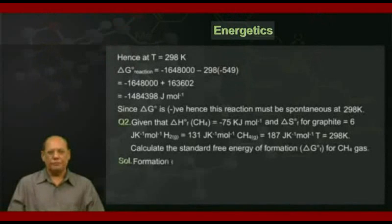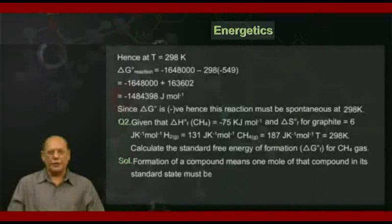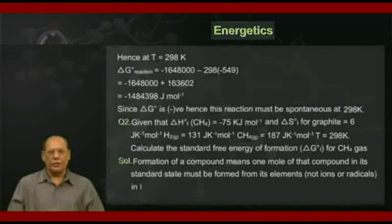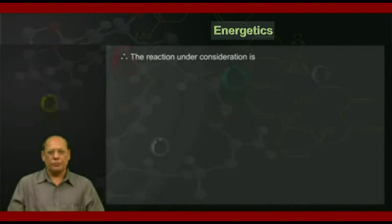The solution is as follows. Formation of a compound means one mole of that compound in its standard state must be formed from its elements, not ions or radicals, in their standard states. Therefore, the reaction under consideration is C(graphite) + 2H₂(g) → CH₄(g), at T = 298 K.